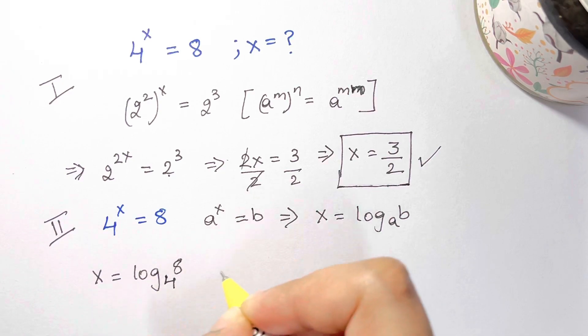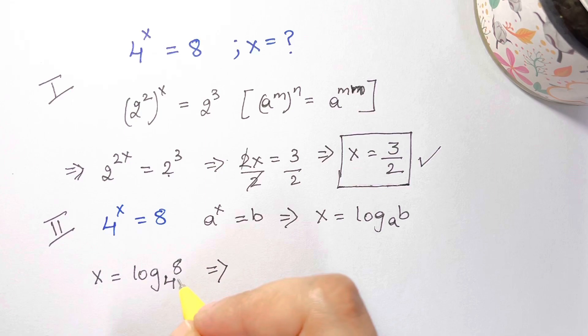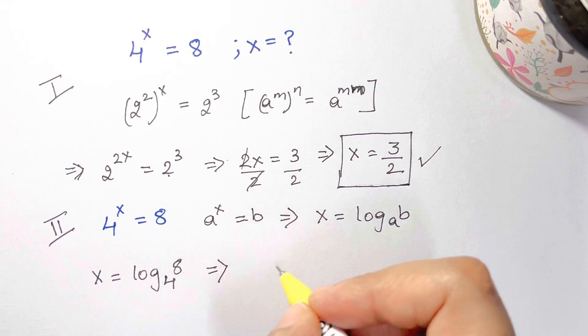Now again we're going to apply this: whenever you have something like this, we can write it as x = log 8 over log 4.